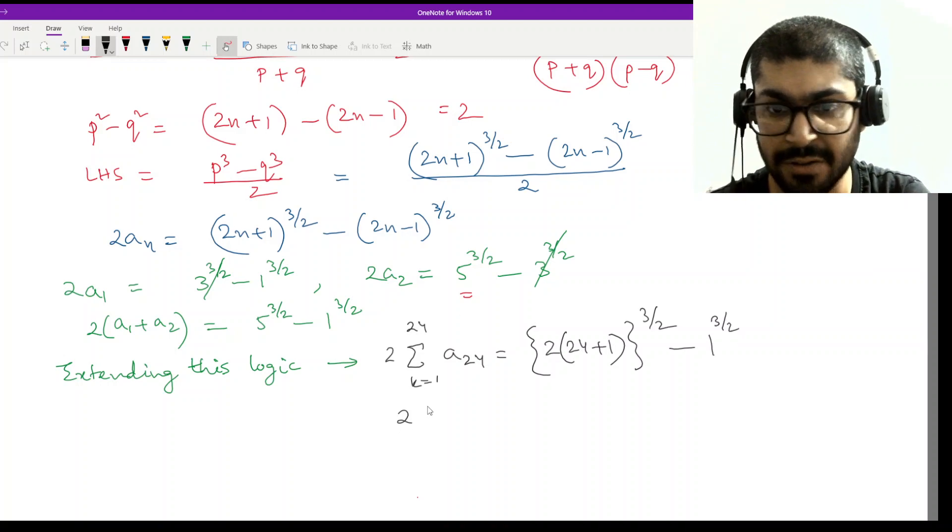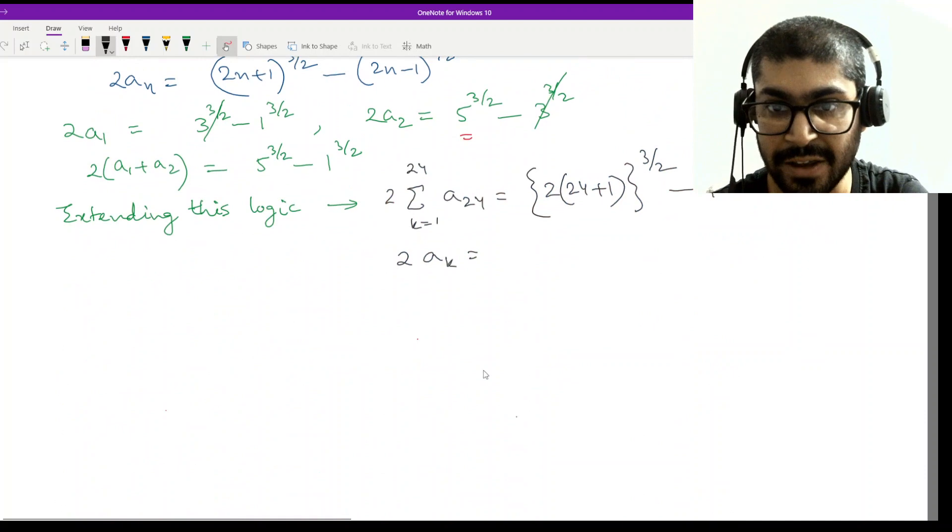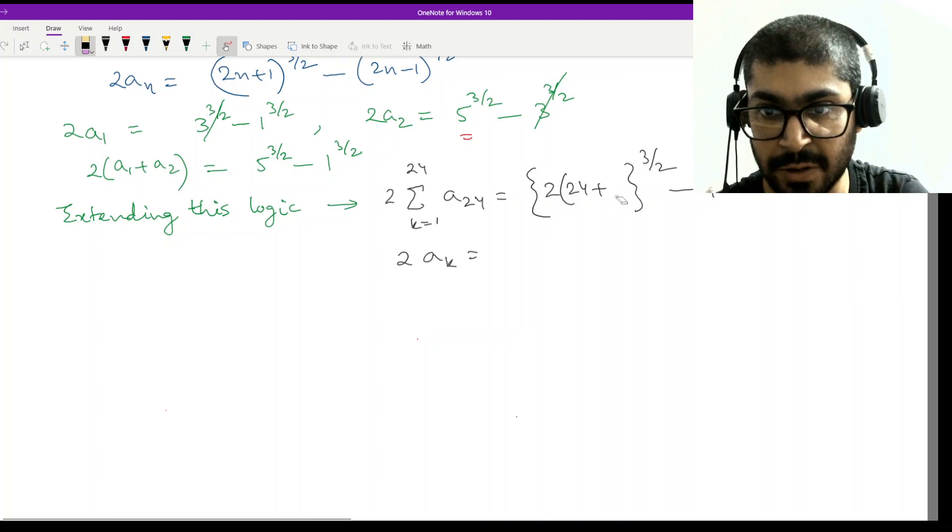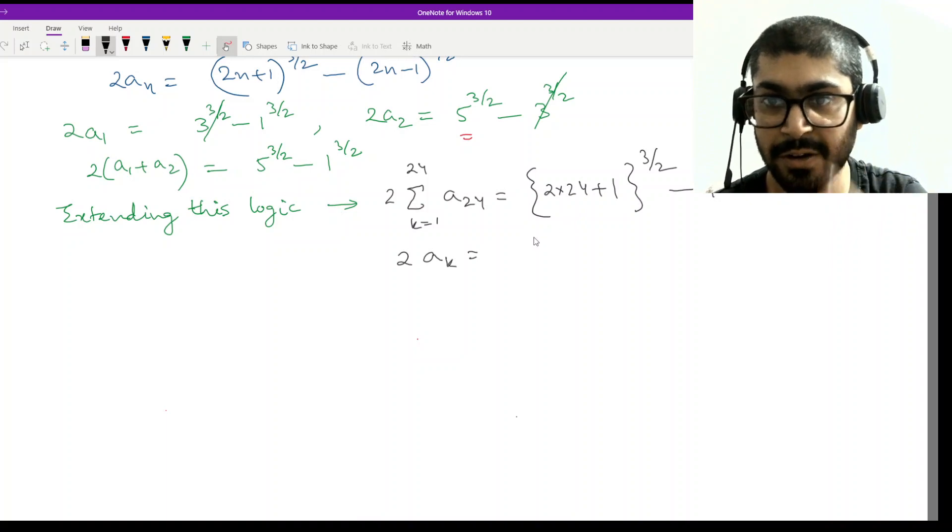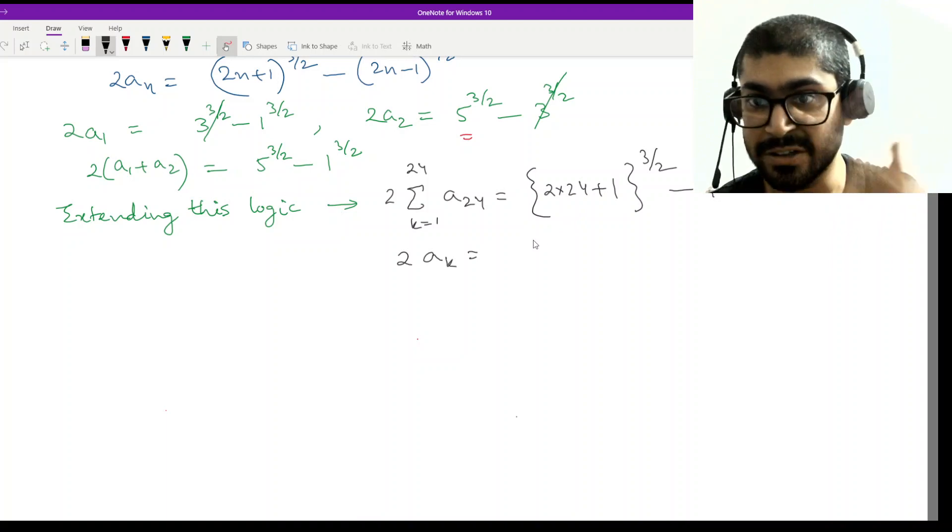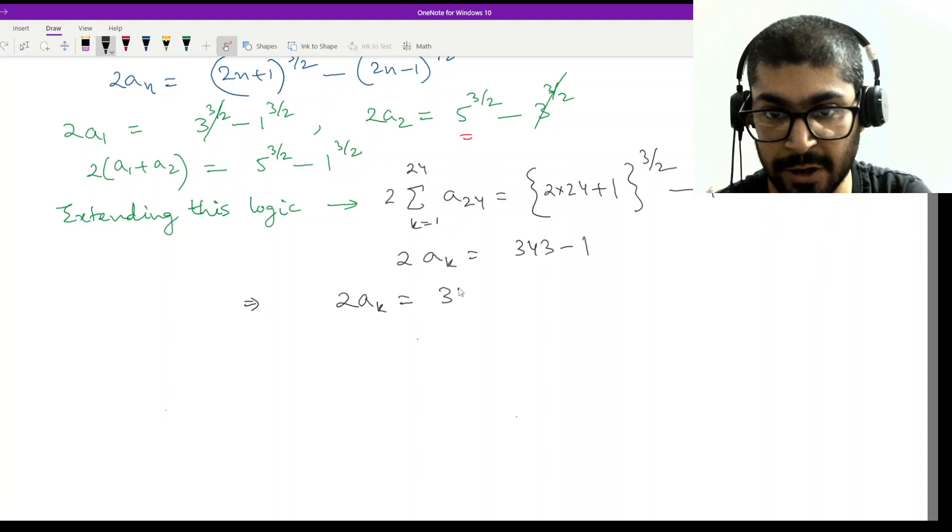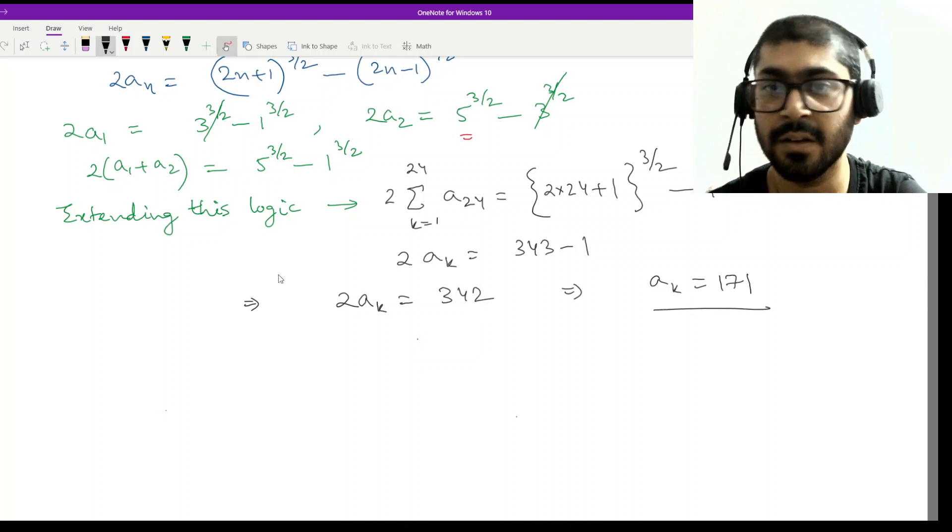Now what is this? I have twice of whatever the value, let's name it a_k. Because that is what we have to calculate. So twice of a_k would be equal to, the bracket will not be at 24 plus 1, this will be 2 into 24 and then plus 1. Because it's 2n plus 1 so 2 into 24 plus 1, so this is 48 plus 1, 49 to the power 3 by 2, that means 49 root will be 7 and 7 cube will be 343 so this is 343 minus 1. Now what do we end up with? Twice of a_k would be equal to 342. So a_k that is the sum is 342 by 2 so 171. So this is option A.